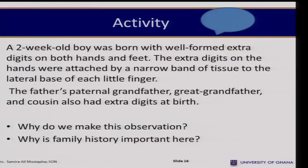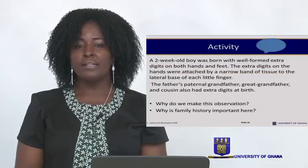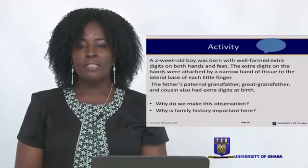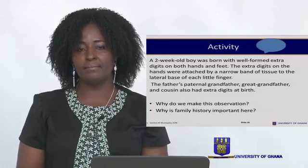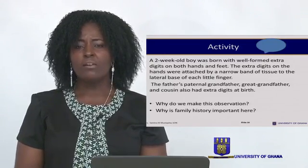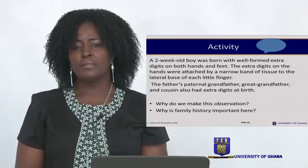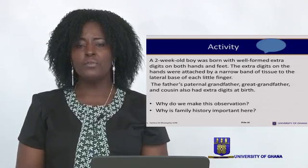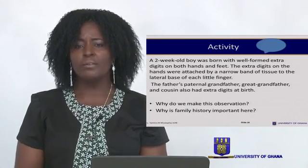Consider this case: a two-week-old boy was born with well-formed extra digits on both hands and feet. The extra digits on the hands were attached by a narrow band of tissue to the lateral base of each little finger. The father's paternal grandfather, great-grandfather, and cousin also had extra digits. Why is there a family history to this, and why is family history important here? Take time to consider and try to answer this question.